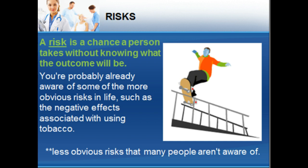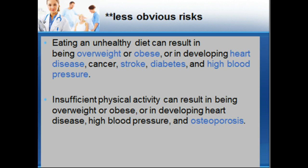There are also some less obvious risks that many people aren't aware of. Eating an unhealthy diet can result in being overweight or obese, or in developing heart disease, cancer, stroke, diabetes, and high blood pressure. Insufficient physical activity can also result in being overweight or obese, or in developing heart disease, high blood pressure, and osteoporosis.